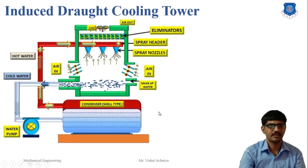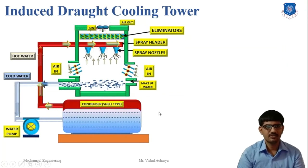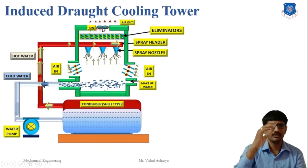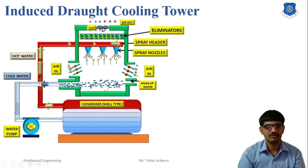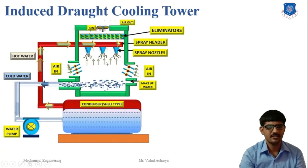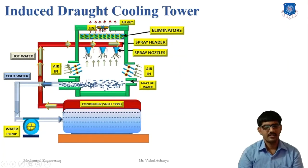In an induced draft cooling tower, we use the blower positioned above the cooling tower. Here, air is sucked from the bottom open holes, and the airflow moves upward. All other devices are the same as the natural draft cooling tower.